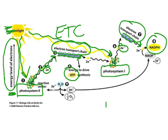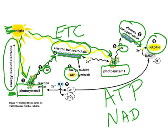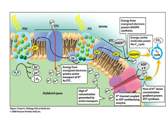So these two molecules, ATP and NADPH, are the two high-energy molecules produced during the light-dependent reactions, and we will see those molecules again. Before we move on to the next set of reactions, let's go over the location of the light reactions.